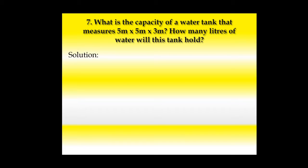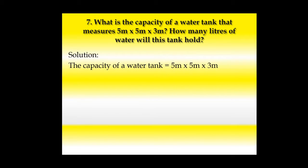Look at the solution. The capacity of the water tank = 5 m × 5 m × 3 m, and after multiplying the answer is 75 cubic meters. Why cubic meters? Because when we multiply meters three times it becomes cubic meters, and we know volume is three-dimensional with SI unit cubic meters.